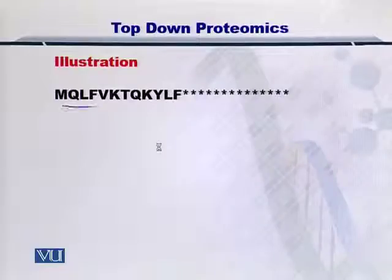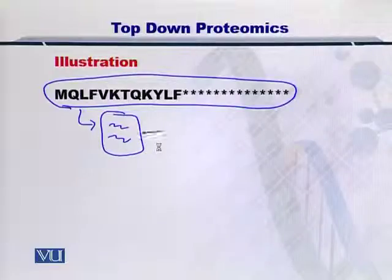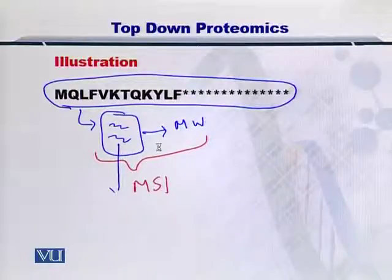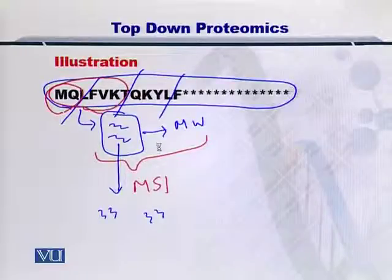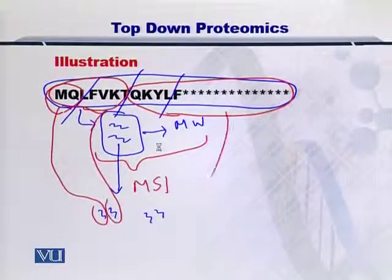If this is the protein in question and it is there in your sample, then what you can do is insert this protein into the mass spectrometer chamber and arrive at its molecular weight — this step is called MS1. After this, you have the fragmentation strategies which actually take these proteins and fragment them at various positions, and you can arrive at the molecular weight of each resulting peptide by simply analyzing these fragments. This is MS2.